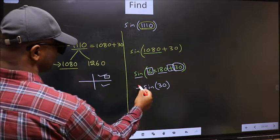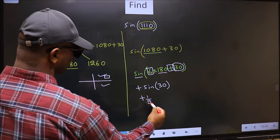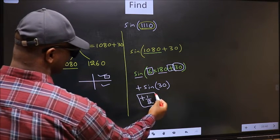So we should put plus. So plus sine 30 is 1 by 2. This is our answer.